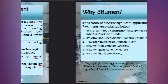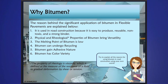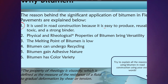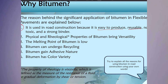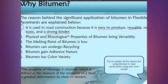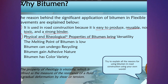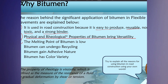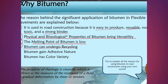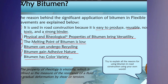So why bitumen? The reasons behind the significant application of bitumen in flexible pavements are that it is easy to produce, reusable, non-toxic and a strong binder. Bitumen also has physical and rheological properties which bring versatility, and its melting point is low. Bitumen can undergo recycling and be used again and again. It can gain an adhesive nature and also has colour variety, surprisingly.